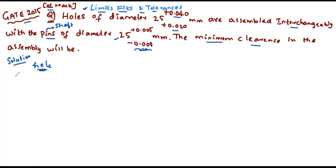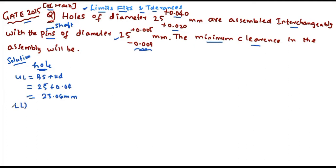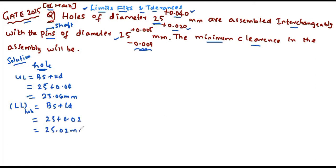Let's find the limits of the hole. Upper limit equals basic size plus upper deviation: 25 plus 0.040, which gives 25.04 mm. For the lower limit, both upper and lower deviations are above the basic size, so lower limit of the hole equals 25 plus 0.02, giving 25.02 mm.